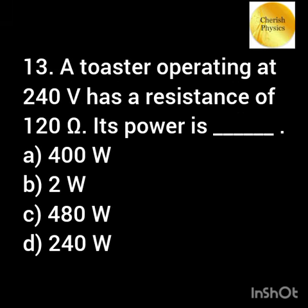A toaster operating at 240 volt has a resistance of 120 ohm. The power is?